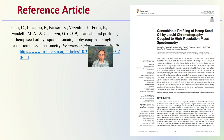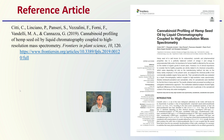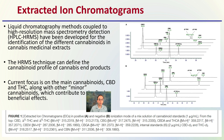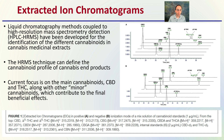Continuing to another research article — same reference link and first page provided if you want more detail. This article looks at the comparison of extracted ion chromatograms, showing these chemical signatures where liquid chromatography methods coupled to high resolution mass spec detection — this is where we get HPLC-HRMS, where HRMS stands for high resolution mass spectrometry — have been developed for the identification of different cannabinoids in cannabis medical extracts.